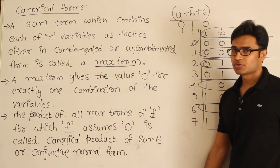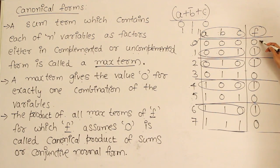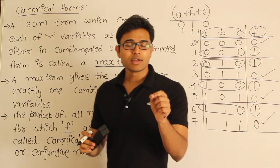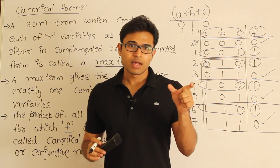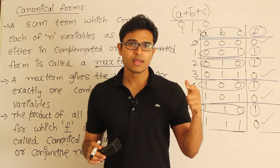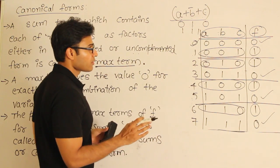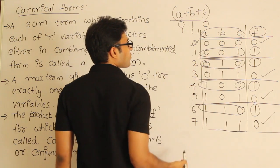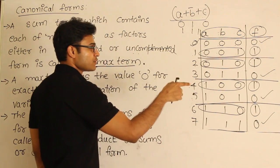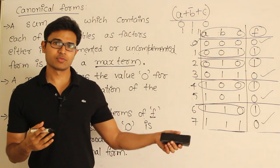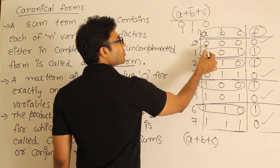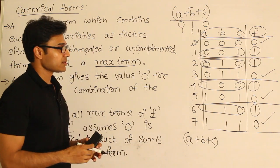The product of all max terms of f for which f assumes 0 — wherever the function is taking 0, you take the product of all those max terms. That is called conjunctive normal form. For this function, where is it taking 0? Here, here, here, and here — for these 4 places the function takes 0. For these 4 cases, you find out the max terms. The max term is: you write the variables in such a way that for that particular assignment, the value is 0, then you put all of them in a product. For the combination 0, 0, 0, the term that produces 0 is a plus b plus c.